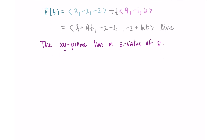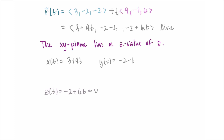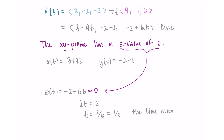Writing the parametric equations: x = 3 + 9t, y = -2 - t, and z = -2 + 6t. To find where the line meets the xy-plane, I set z equal to 0: -2 + 6t = 0. Adding 2 to both sides gives 6t = 2, then dividing by 6 gives t = 1/3.